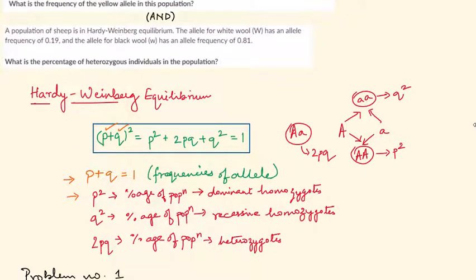For the second question: a population of sheep is in Hardy-Weinberg equilibrium. The allele for white wool is capital W, with an allelic frequency of 0.19. The allele for black wool is small w, which is the recessive allele, with an allelic frequency of 0.81. So p = 0.19 and q = 0.81.